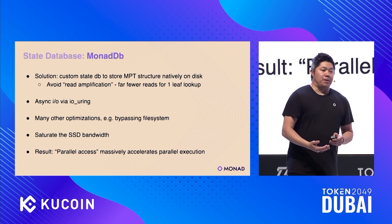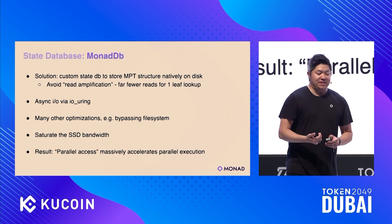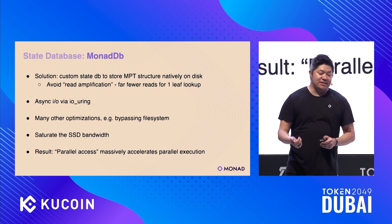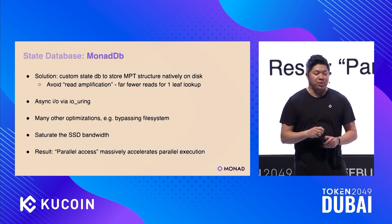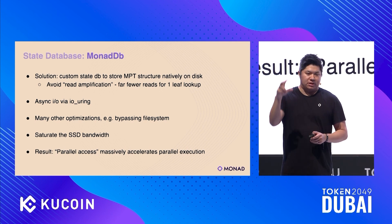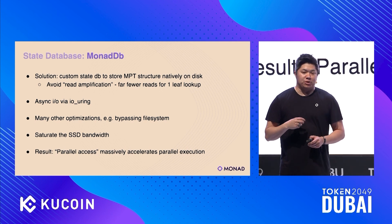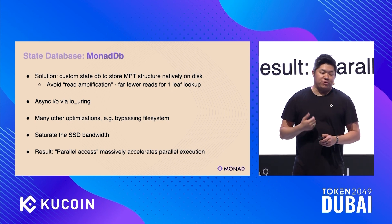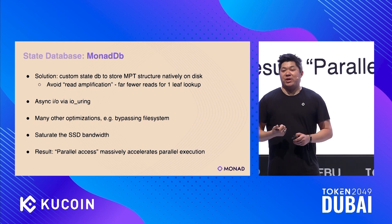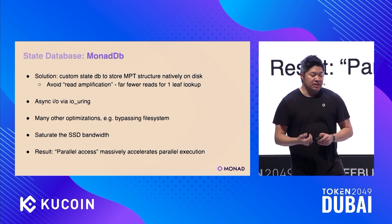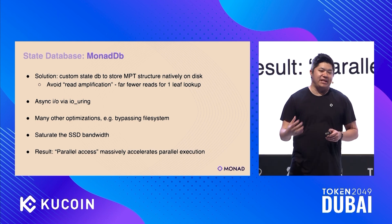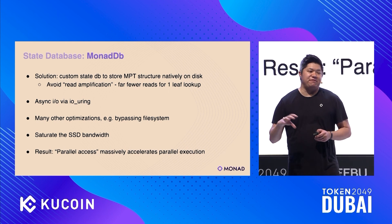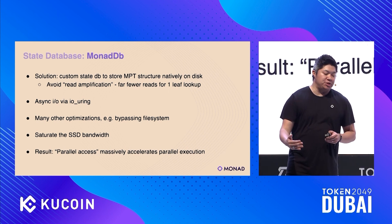So how did we solve this problem? We introduced a custom database called MonadDB. This is a custom state store that stores the Merkle Patricia tree natively on SSD, avoiding the read amplification problem of quadratic-style lookups — instead directly navigating to a node in the Merkle tree. In addition, we have support for asynchronous I/O using io_uring, and we also bypass the file system for additional improvements. This allows many transactions running in parallel to all read from the database effectively in parallel, enabling parallel execution to be performant.